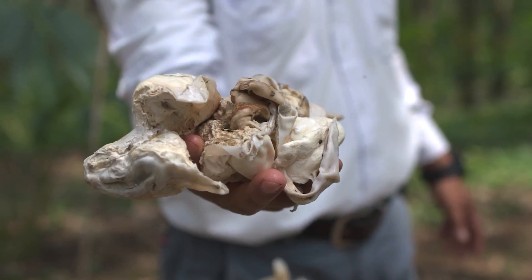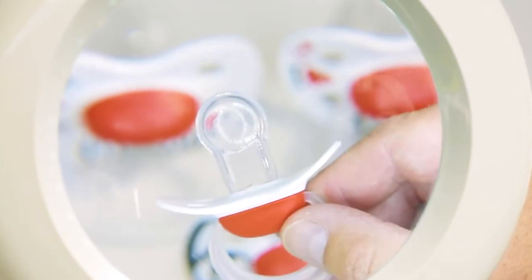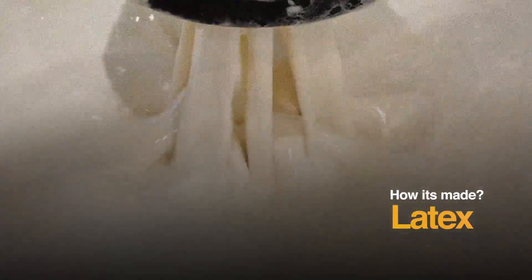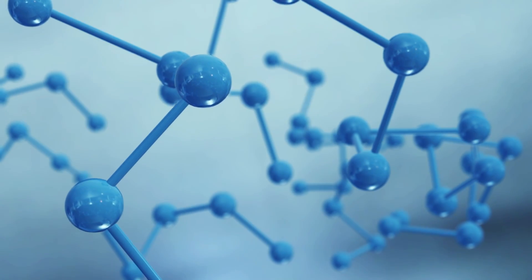But how does this gooey tree sap turn into all these awesome things? Let's dissect the science behind it. We know that latex is like a microscopic party inside water—tiny polymer particles are suspended, the key ingredient for making rubber.